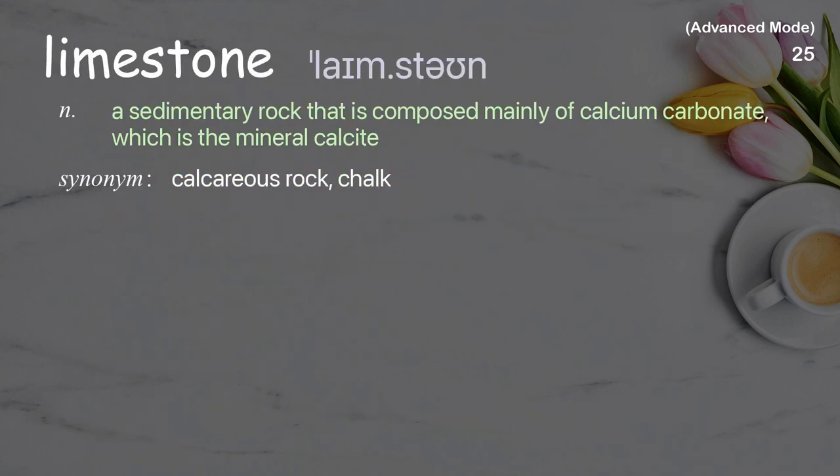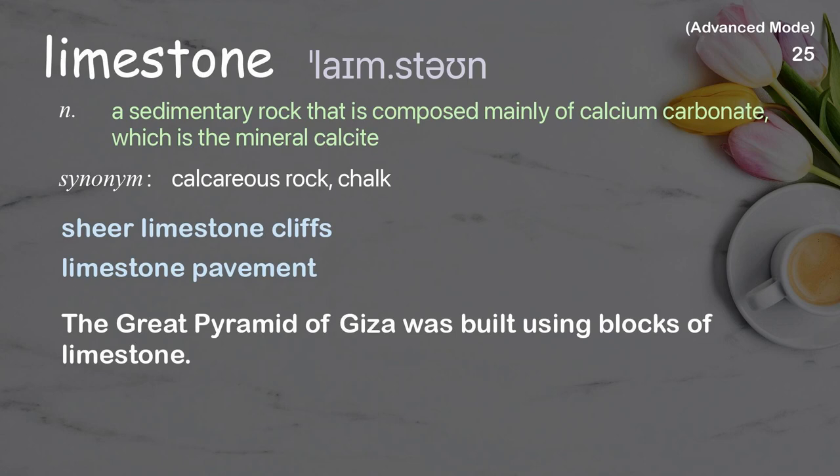Limestone: A sedimentary rock that is composed mainly of calcium carbonate, which is the mineral calcite. Examples: Sheer limestone cliffs. Limestone pavement. The Great Pyramid of Giza was built using blocks of limestone.